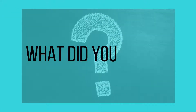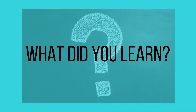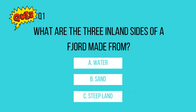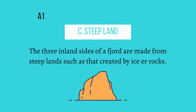So what did you learn? Let's try a quiz. Question 1: What are the three inland sides of a fjord made from? A. Water. B. Sand. C. Steep land. The answer is C, steep land. The three inland sides of a fjord are made from steep lands such as that created by ice or rocks.